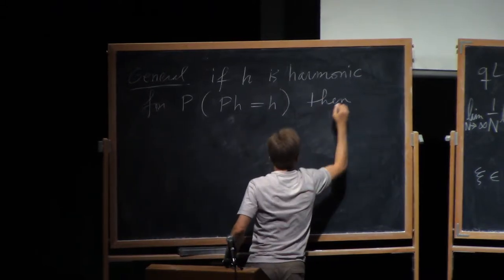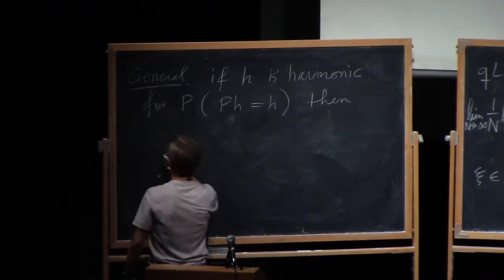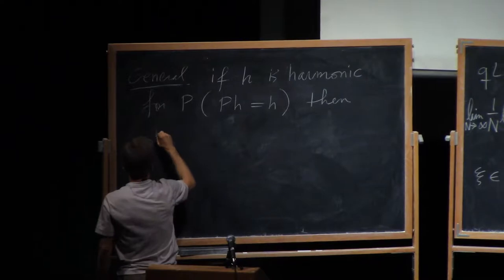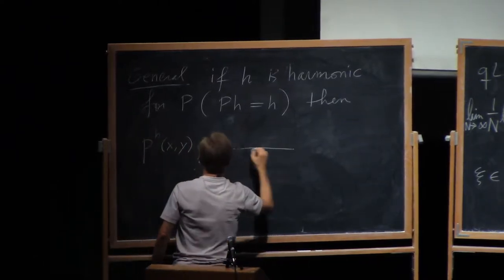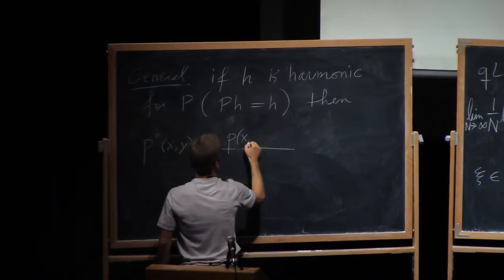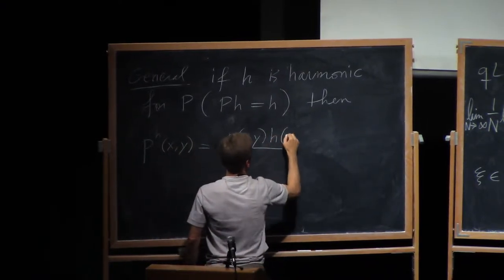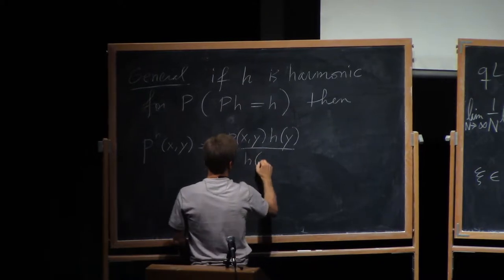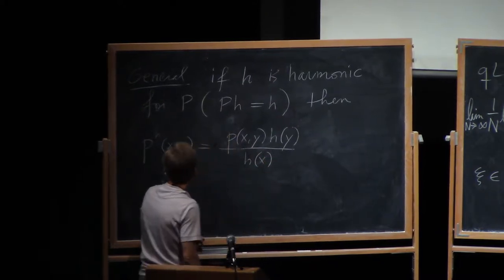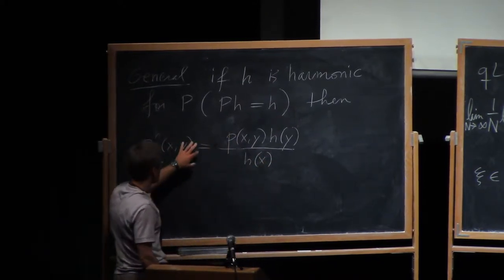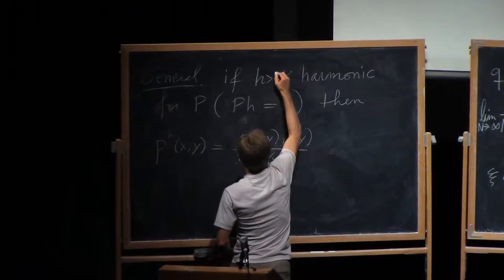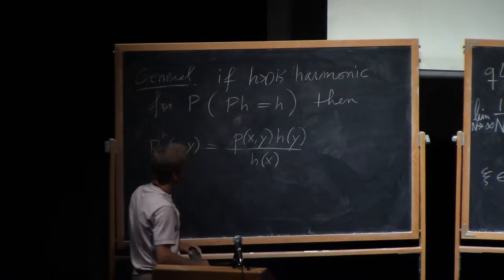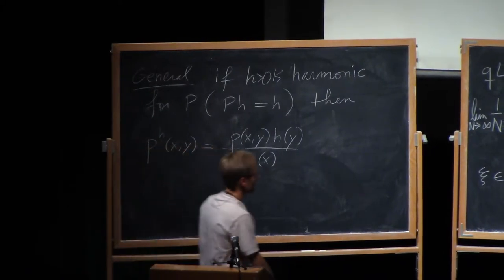Then you can define a new Markov transition probability, pH of x, y. By doing this, you go p x, y times h of y divided by h of x. So the harmonicity of H makes this a legitimate Markov transition probability. And let's assume that H is positive, so it's perfectly okay to divide by. So that's the Dube-H transform.